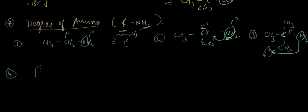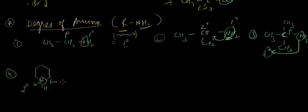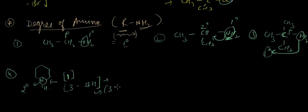As I mentioned, how many fewer hydrogen atoms are attached to the nitrogen atom also determines the degree of the amine. For example, if the number of carbon atoms directly attached to this nitrogen atom is two, the degree is two. We can also calculate it using the formula: three minus the number of hydrogen atoms attached to the nitrogen atom. In this case, three minus one equals two, confirming the degree of this amine is two.